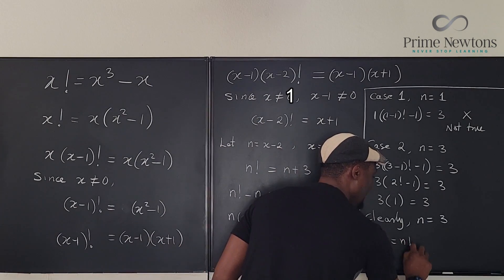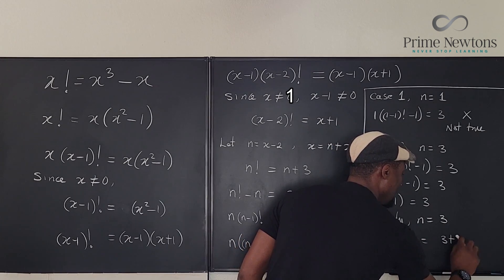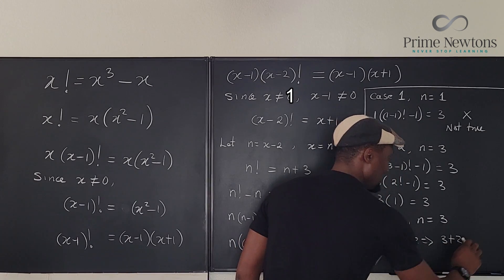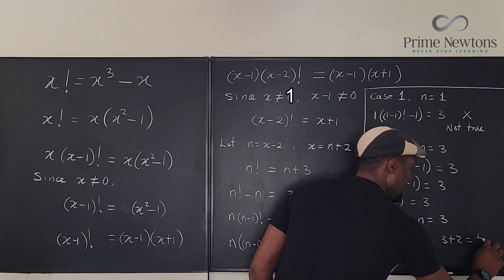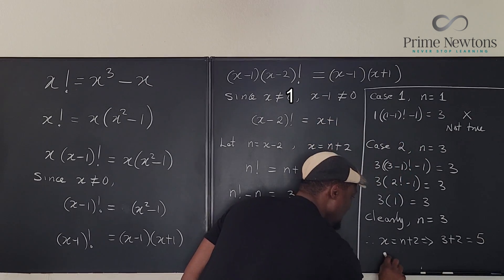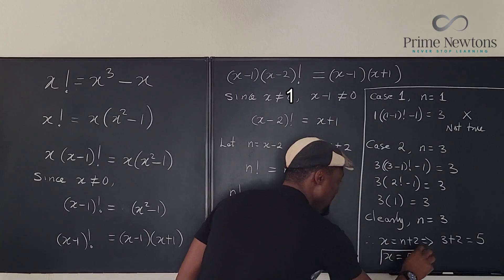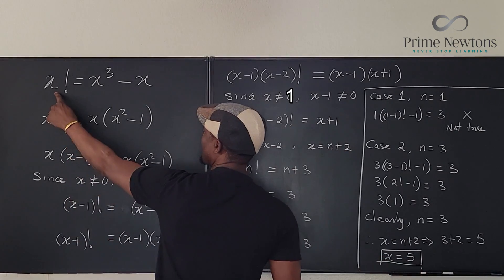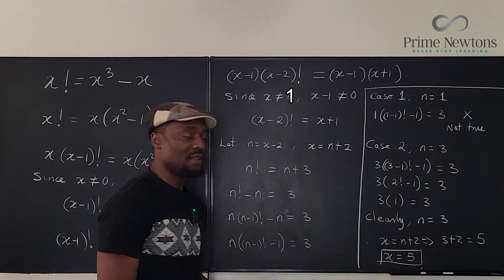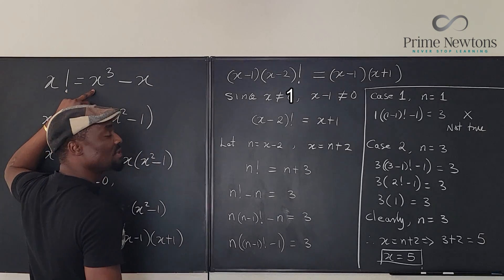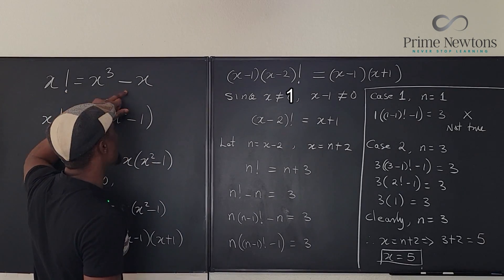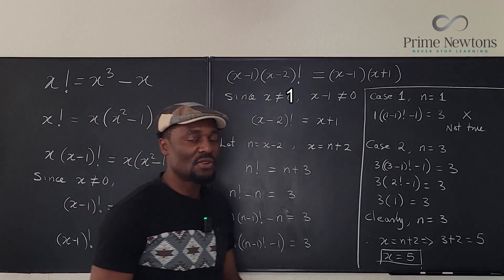Therefore, x equals n plus 2, which is 3 plus 2, which is equal to 5. So x equals 5. And if you go plug in, 5 factorial would be 120. 120 equals 5 cubed, which is 125 minus 5, which is 120. So that's it.